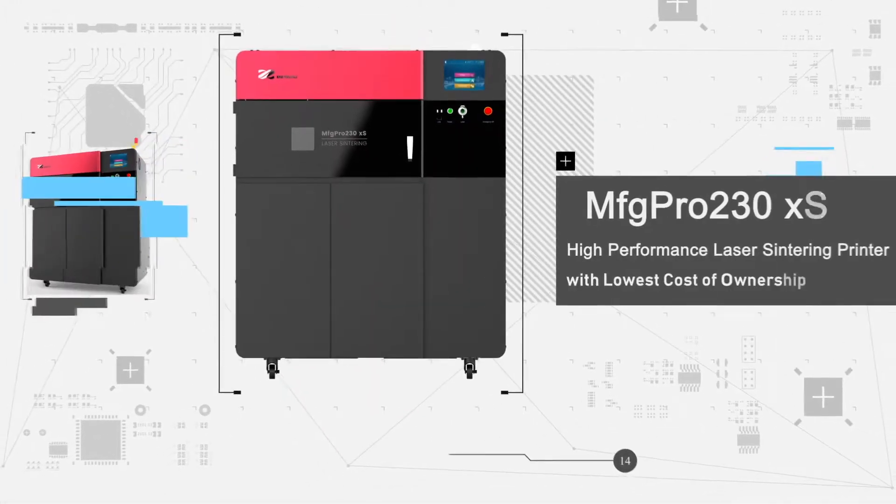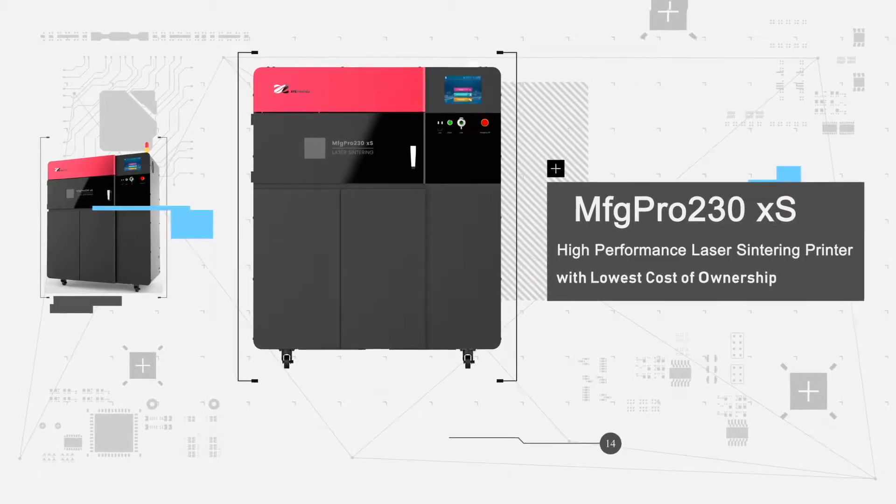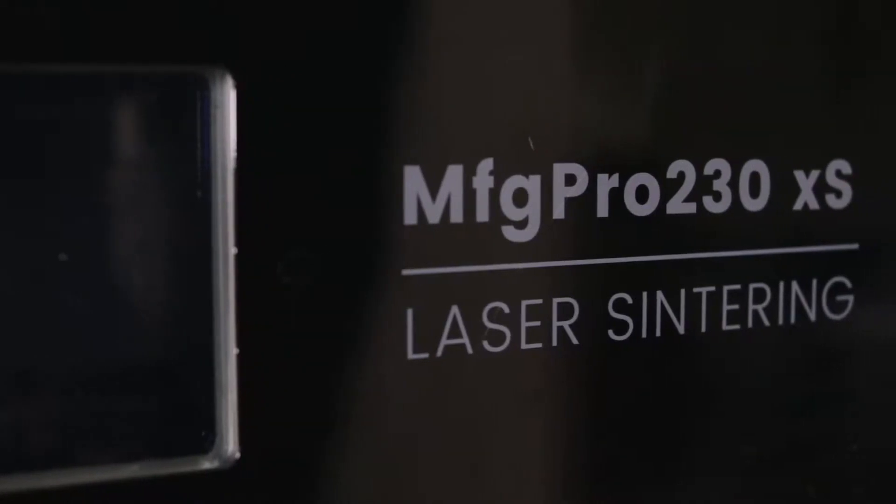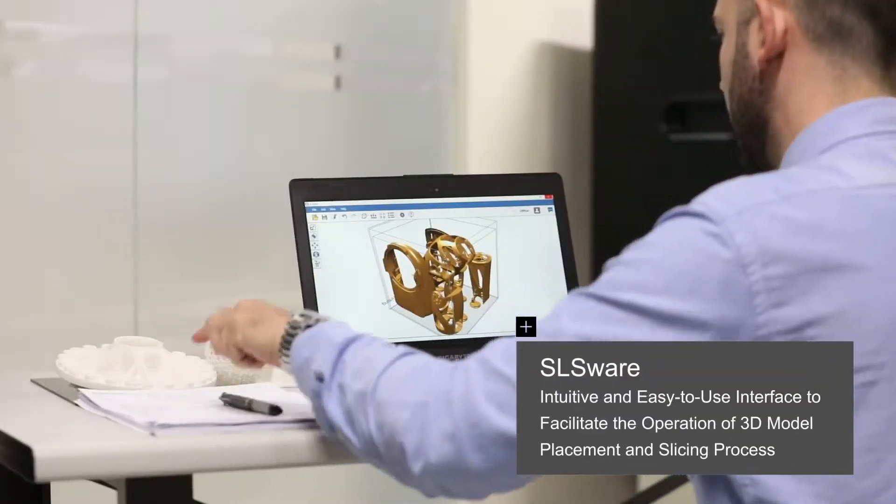The XYZ Printing MFG PRO 230XS is a Chinese-made 3D printer with a print volume of 230x230x230mm. It is able to print multiple functional parts quickly and sells for around $60,000.